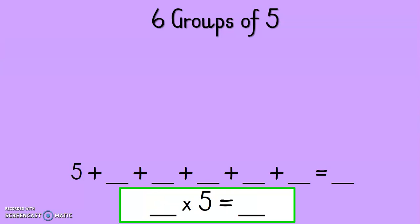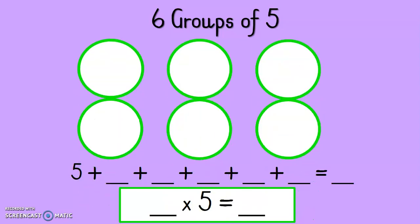Now I want you to grab a piece of paper and try this by yourself. I'm going to show you what to do and then you must pause the video. We have to do 6 groups of 5. How many groups do I have to draw? Yes, 6. There are my 6 groups. Now pause the video, draw your 6 groups, put 5 stars in each group, do your sum — 5 plus 5 plus 5 plus 5 plus 5 plus 5 equals — count all the stars together and write your answer. Then do the times table: how many groups times 5 gives me my answer. Pause the video and quickly do it.